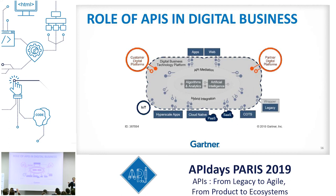If you look at other perspectives in the industry, you can find very interesting research from Gartner on the digital business technology platform. This diagram highlights the importance of data analytics at the core, with grid integration as a layer to support connectivity and API management as a way to transform this data and expose it to customers and partners.